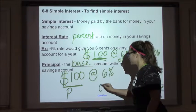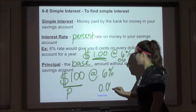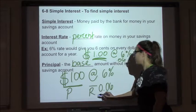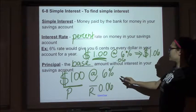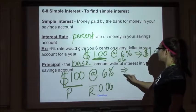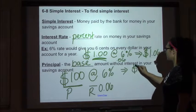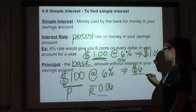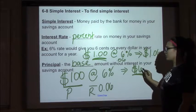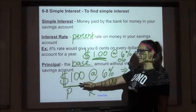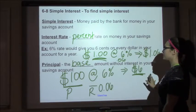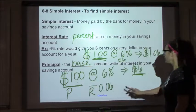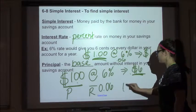Our rate is six percent, also known as 0.06. A hundred dollars at six percent gives us six dollars, so our simple interest is six dollars — that's how much we're getting for keeping a hundred dollars in our bank account. If we wanted to know our total balance, we would add a hundred and six together.